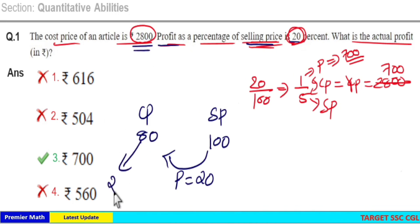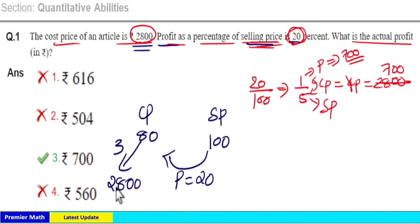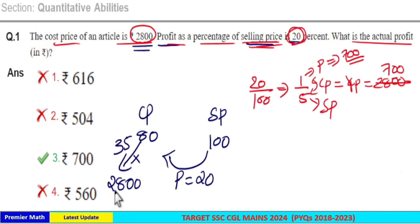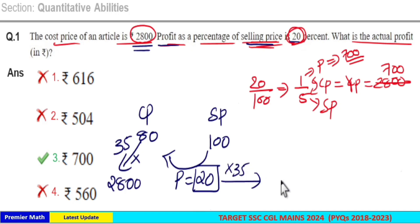So 80 rupees corresponds to 2800, meaning the scale factor is 35 (since 80 × 35 = 2800). Then profit equals 20 rupees × 35 = 700 rupees.